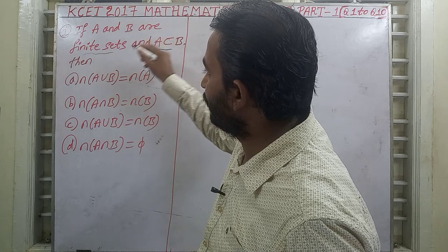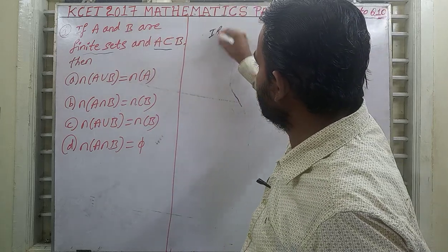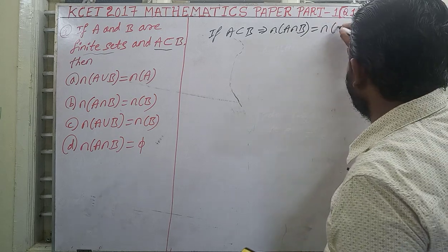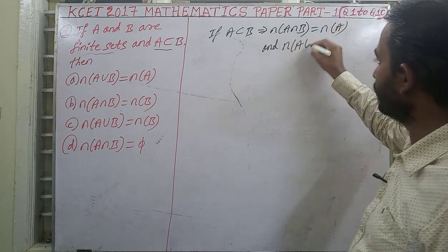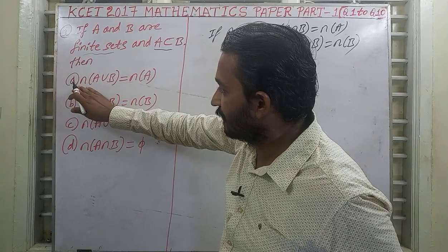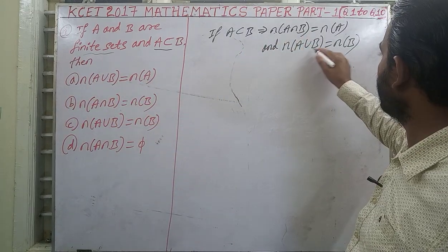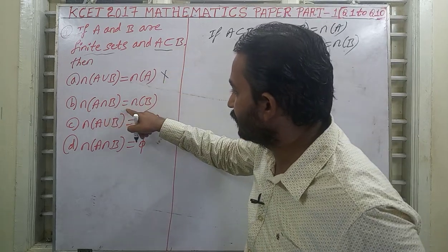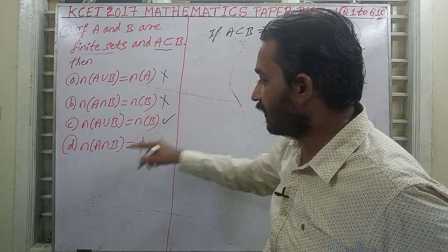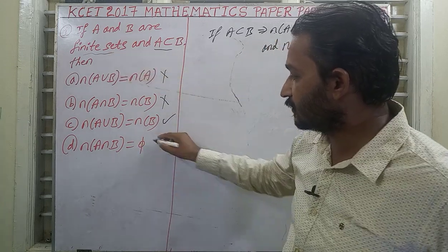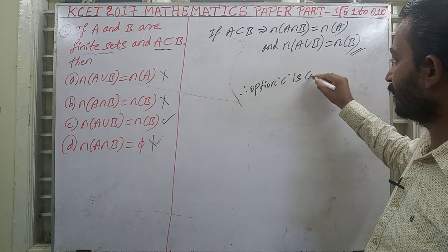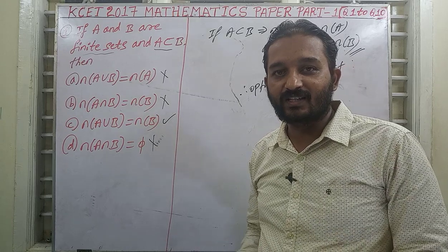See the question: if A and B are finite sets and A is a subset of B, then we know this implies n(A∩B) = n(A) and n(A∪B) = n(B). Checking the options: n(A∪B) = n(A) is wrong; n(A∪B) = n(B) is correct; n(A∩B) = n(B) is wrong. So option C, n(A∪B) = n(B), is the correct answer.